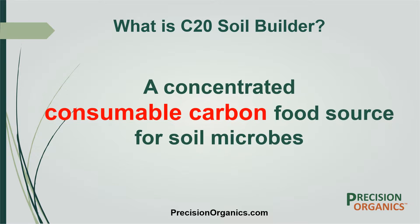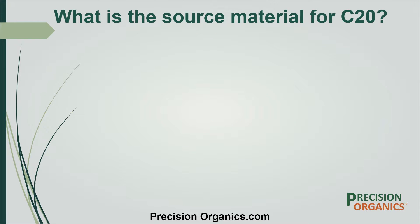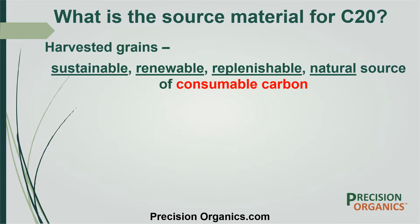C20 is concentrated consumable carbon for soil microbes. Simply stated, C20 is microbe food. C20 has been developed using all natural grain products — a sustainable, renewable, and replenishable source of carbon for feeding soil microbes — which makes C20 an environmentally friendly product.